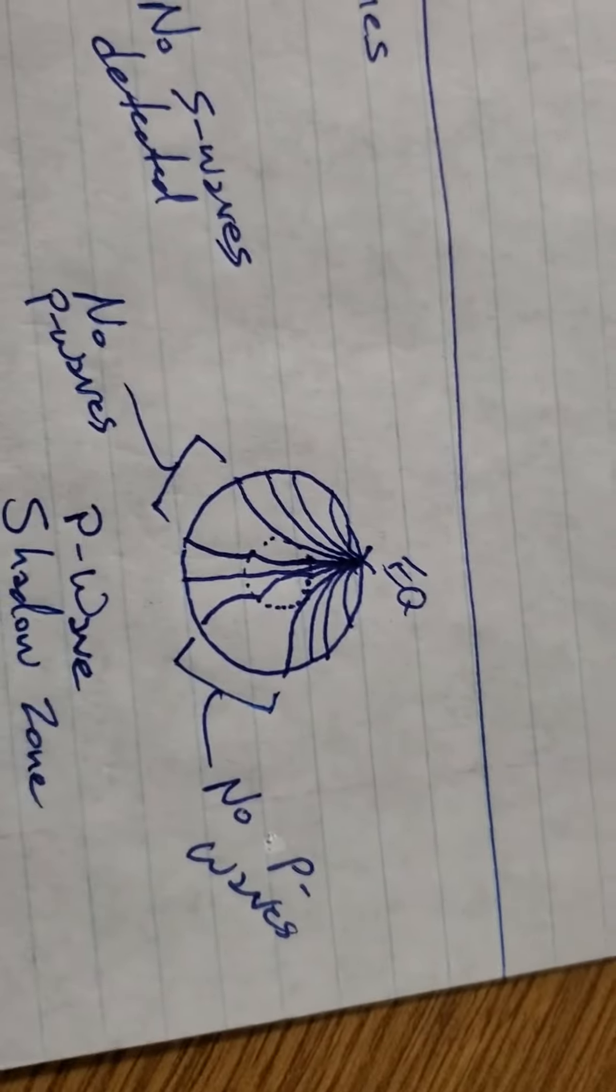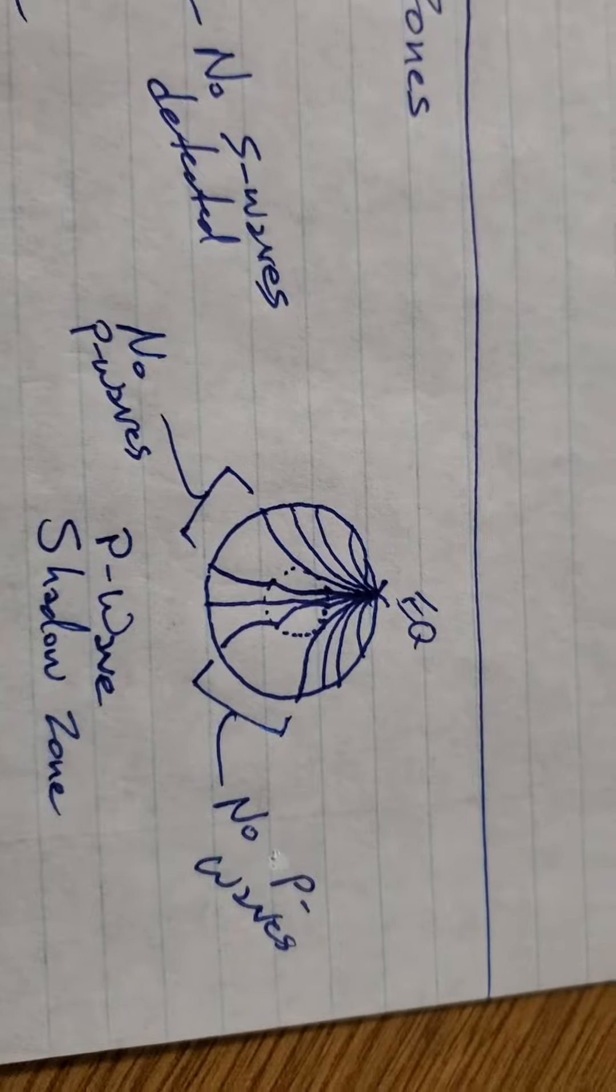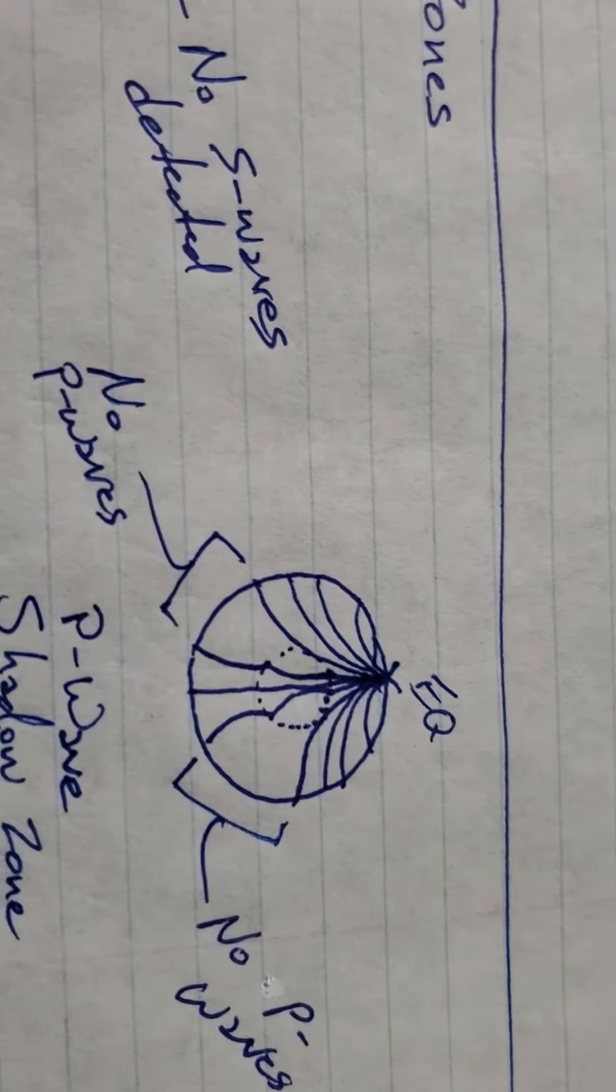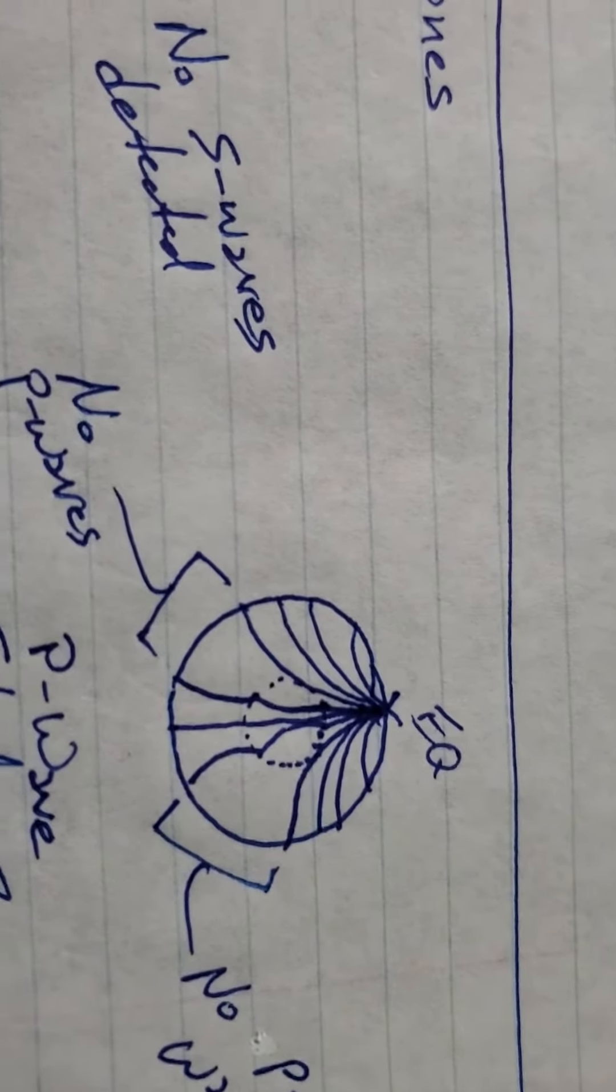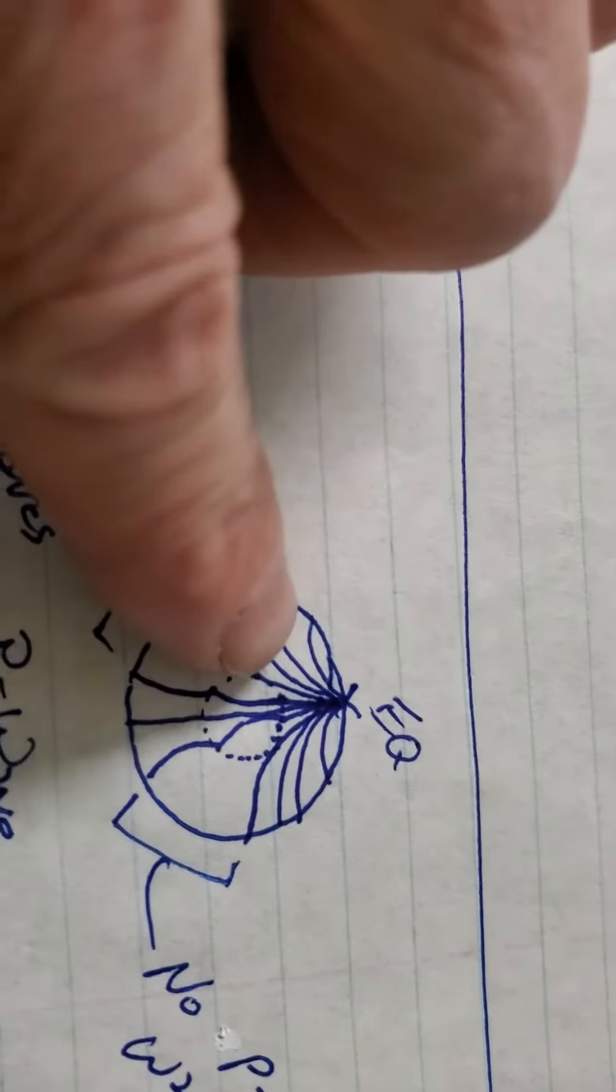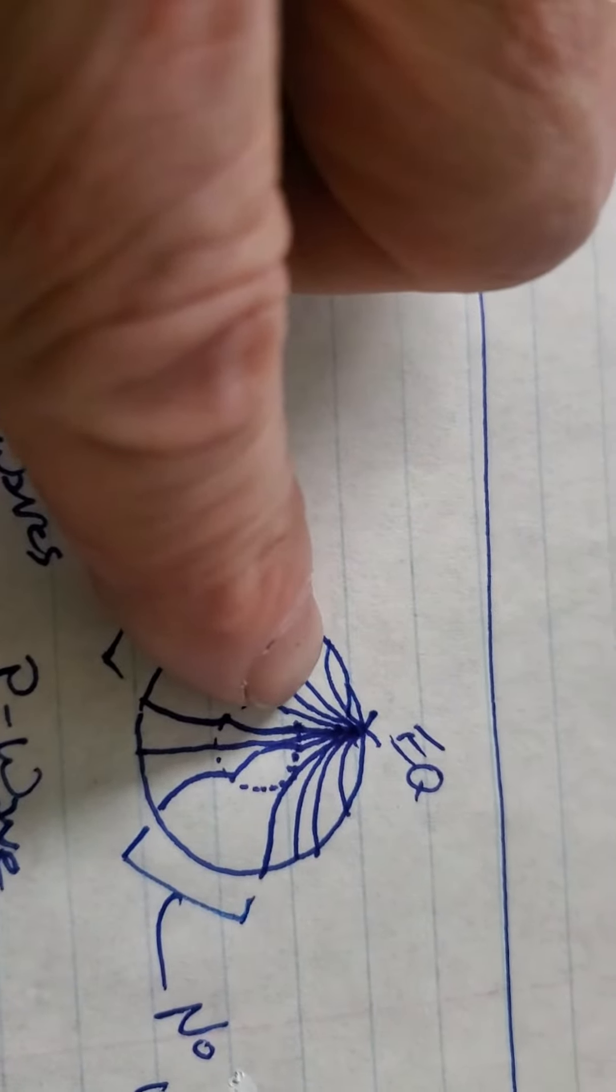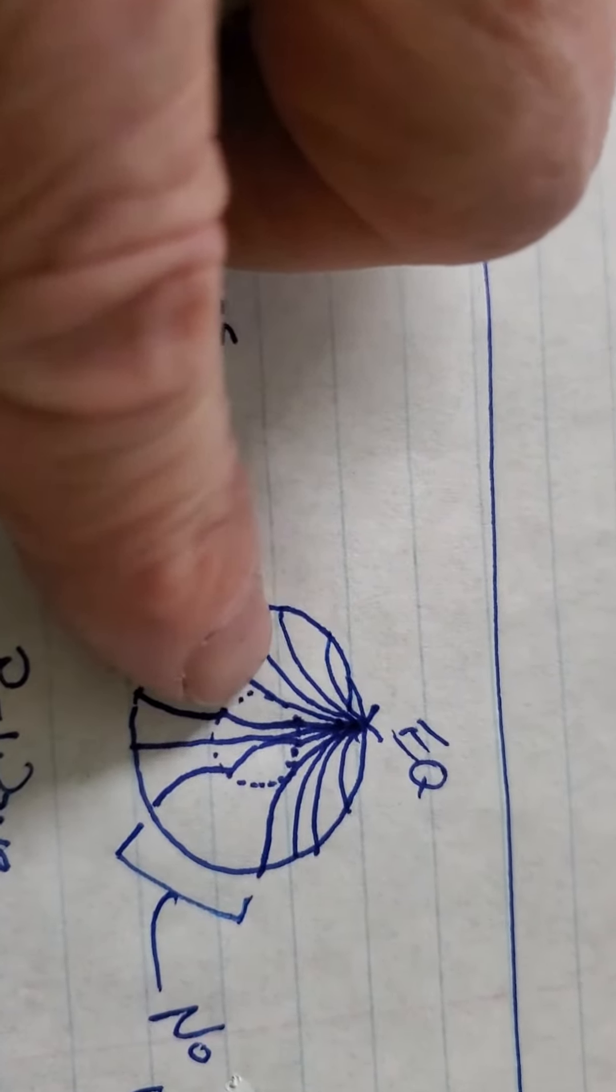P-waves can travel through solids and liquids. So when they reach the core, they can go through it, but they're refracted, they're bent. When they enter the core they bend, and when they exit the core they bend.